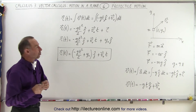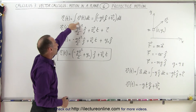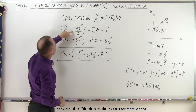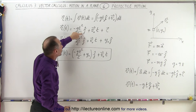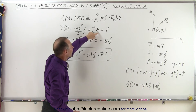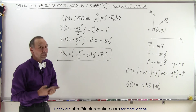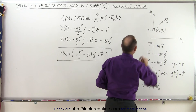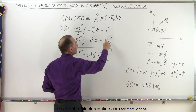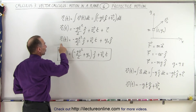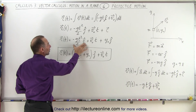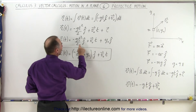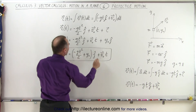Now we also want to find the position vector. The position vector is going to be the integral of the velocity vector, so we plug it in times dt. When we integrate we get minus g·t² over two in the j direction plus v-initial times t, plus some constant of integration — that would be the initial position of the object. In the x direction the initial position is zero, but in the y direction the initial position is y-sub-naught, so our initial position is going to be y-sub-naught in the j direction.